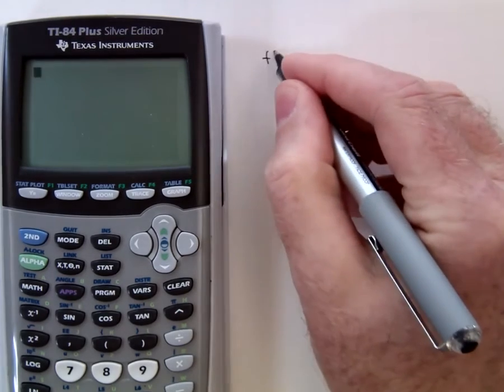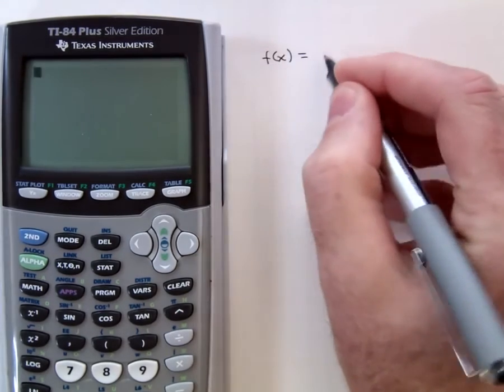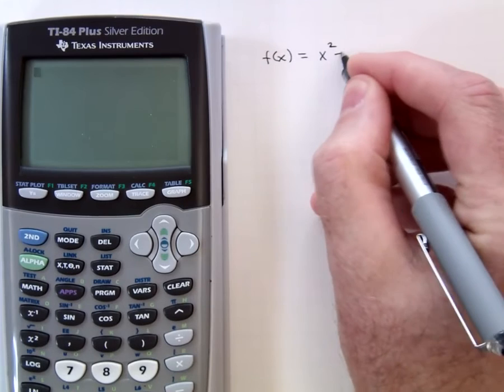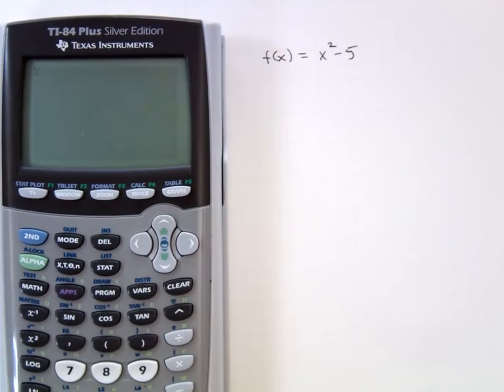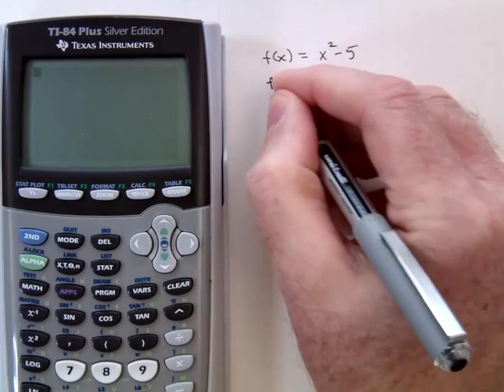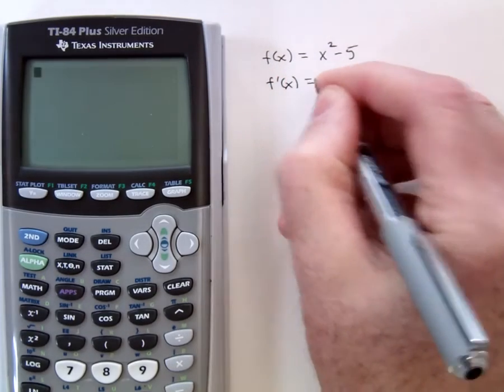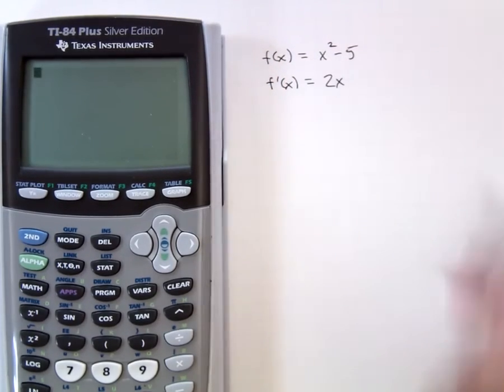The first thing we need is a function that has the square root of five as a zero, and the obvious choice is f(x) = x² - 5. We also need to know the derivative of our function, which is 2x.